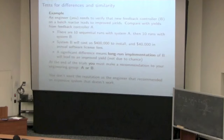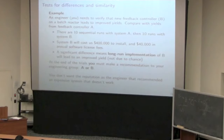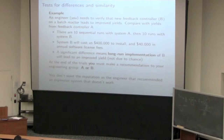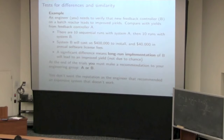Each batch takes about three days to run. They'll give it to you for a month, meaning you can do about ten runs. You can try the controller for ten batches and see whether it works better, worse, or makes no difference. If you choose to buy that feedback controller afterwards, it's going to cost $400,000 — typical prices for these systems — plus an annual maintenance fee of $40,000 for the software. Your boss asks you to evaluate this decision and make a recommendation.